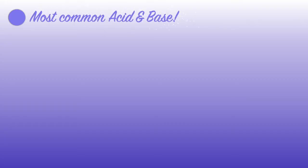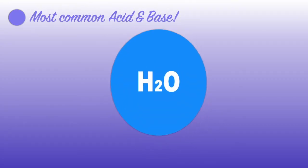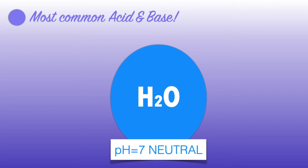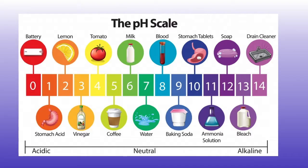Water is the most unique substance on earth. It has a pH level of 7, making it neutral. This means that it can play as both an acid and a base. In the previous example, we saw that when water reacted with a strong acid like HCl, water acted like a base. If water were to react with a base, it would act as an acid.